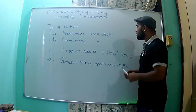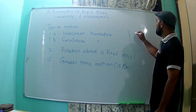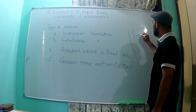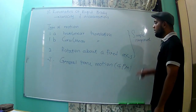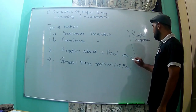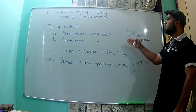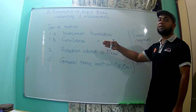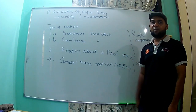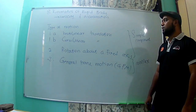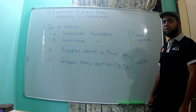I will consider the first three as simple components. So we have three simple components: rectilinear translation, curvilinear translation, and rotation about fixed axis — and one complex one, which is general plane motion. What we'll do is go one by one and see how we can analyze each type of motion.